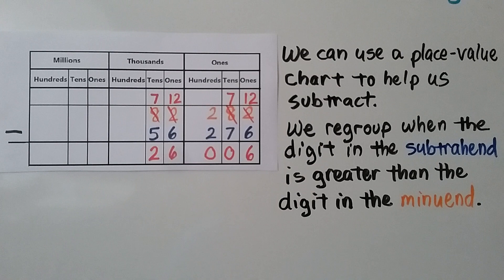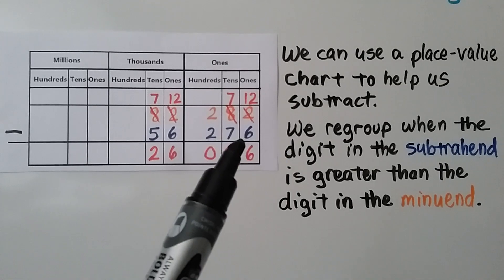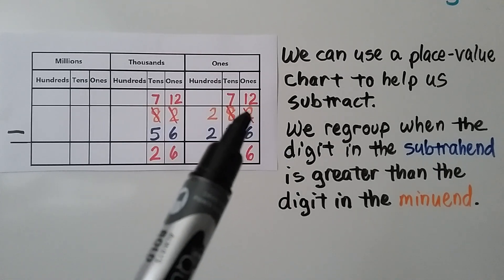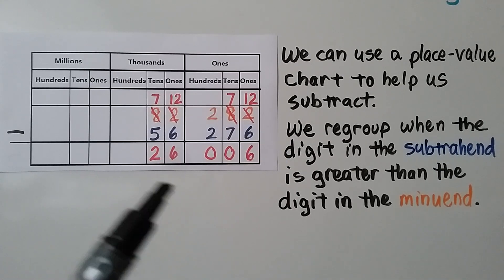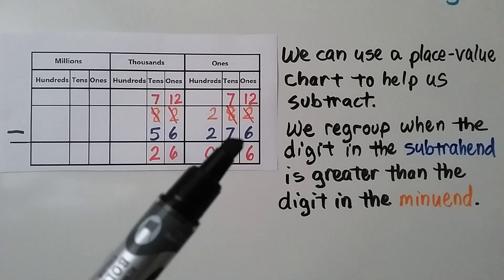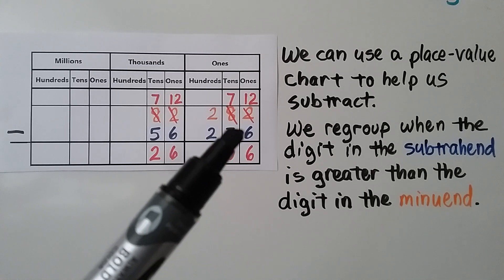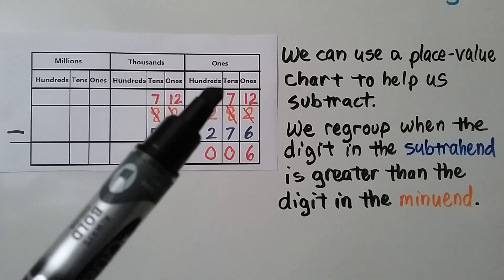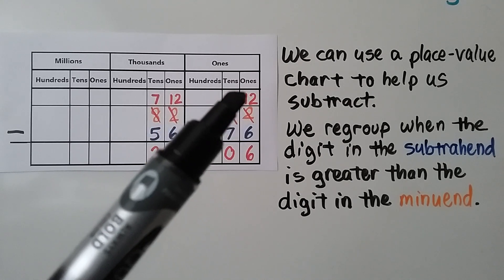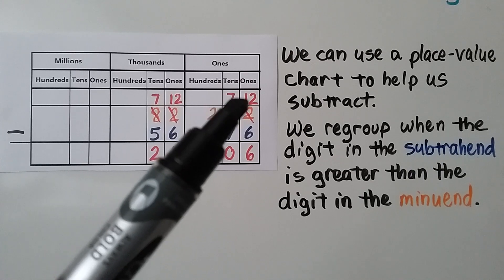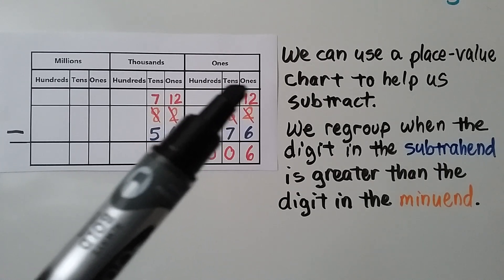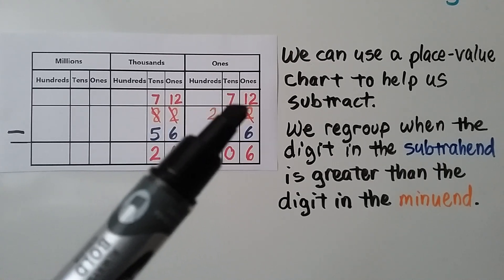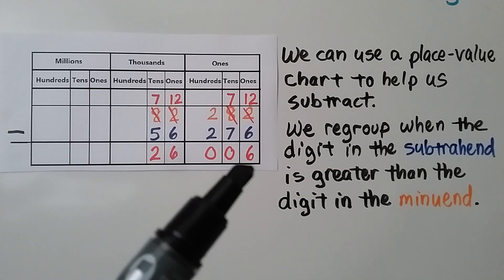We can use a place value chart to help us subtract. We regroup when the digit in the subtrahend is greater than the digit in the minuend. Using a place value chart, we had a 2 and needed to take away 6 and we couldn't. So we asked the 8 for 1 — it became a 7 — and the 2 became 12 ones, because we took a 10 from the tens place and gave it to the ones place.